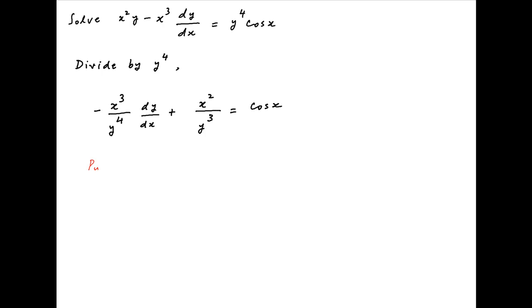Now let 1 upon y cube be equal to z. Taking the derivative of both sides with respect to x, we get minus 3 upon y raised to the power 4 dy upon dx is equal to dz upon dx. Dividing both sides by 3, we get minus 1 upon y raised to the power 4 dy upon dx is equal to 1 upon 3 times dz upon dx.